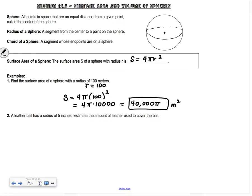It says a leather ball has a radius of 5 inches. Estimate the amount of leather. Amount of leather is surface area, so it's 4π times 5 squared. 5 squared is 25 times 4 is 100, so we get 100π inches squared. You could find these as decimal approximations, but I typically leave the π in because it's more exact.